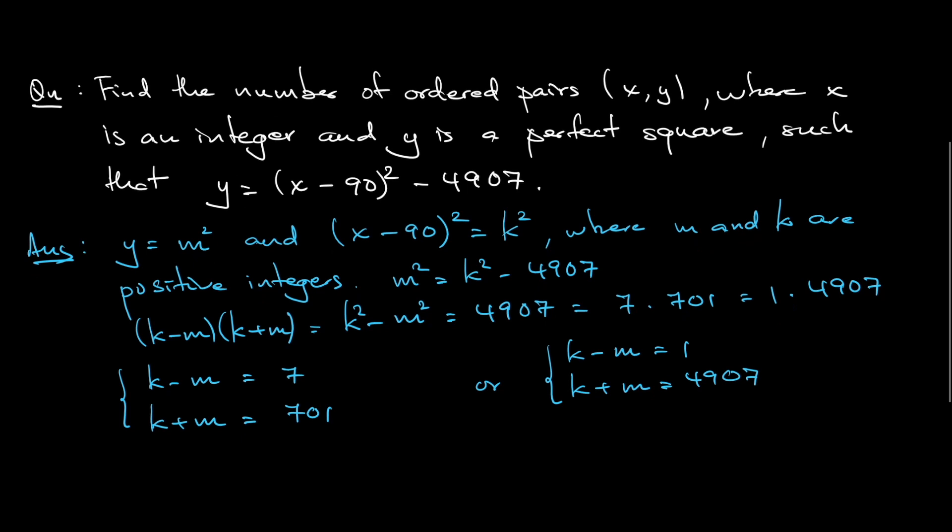So here is just simultaneous equation. The first simultaneous equation will give you k to be, basically add the two equations together, divided by 2, that will give you k. So 4908 divided by 2, that's 2454, and that makes m to be 2453, so that's 347.